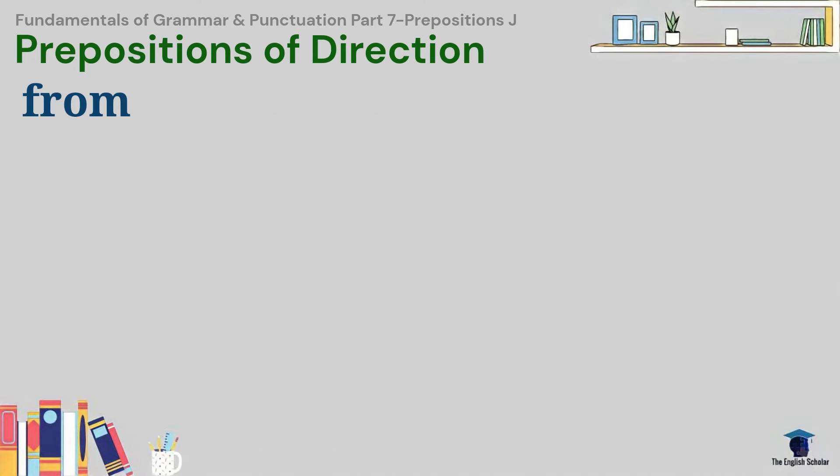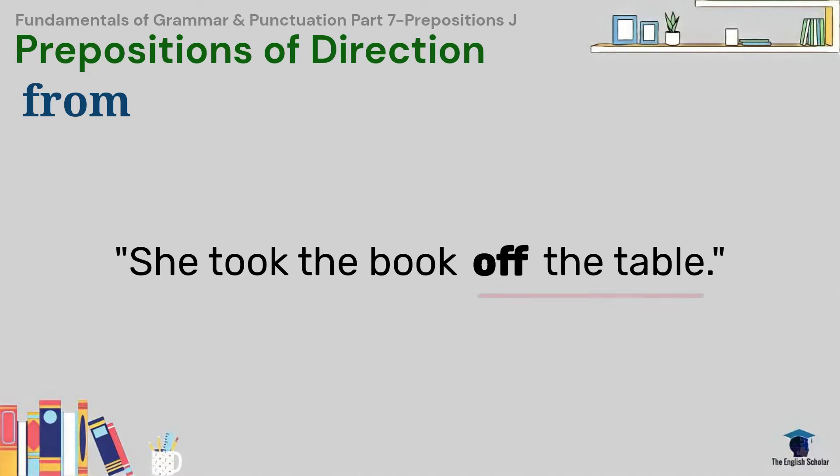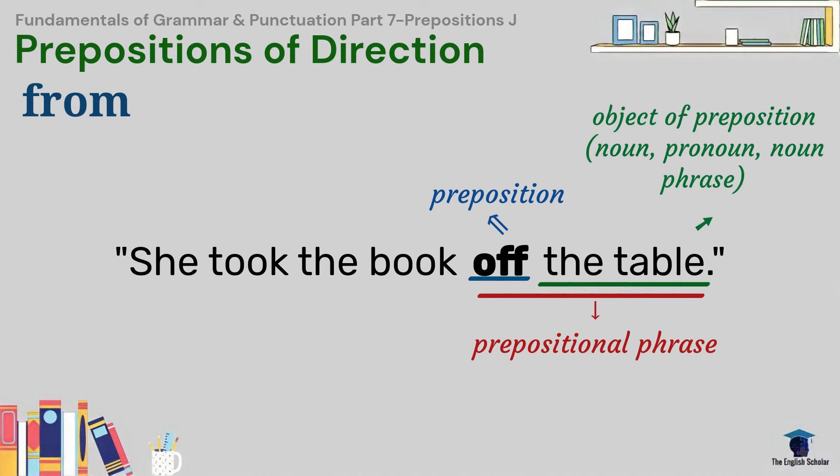Let's have from to begin with. By the way, our example sentences in this video contain underlined phrases. Those phrases are called prepositional phrases. The bolded words are the prepositions, and the nouns, pronouns, or noun phrases that come after them are their objects, called the object of preposition.